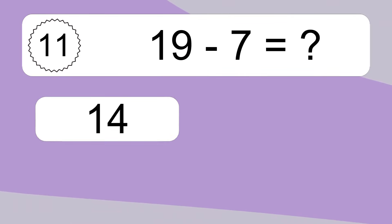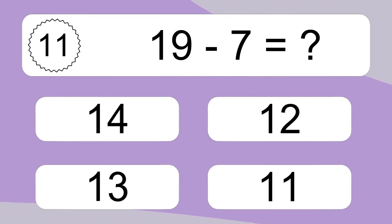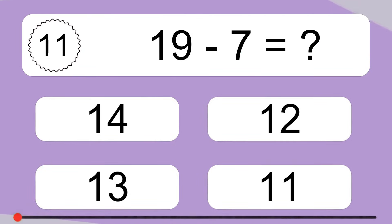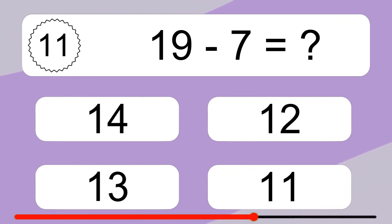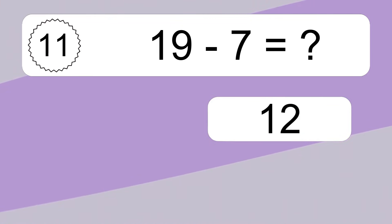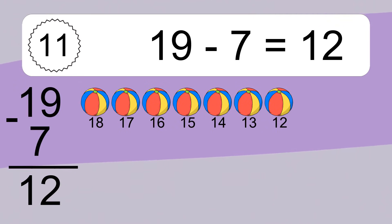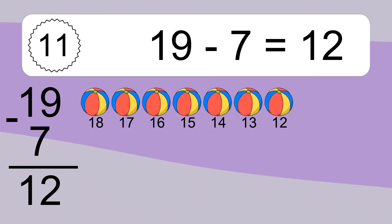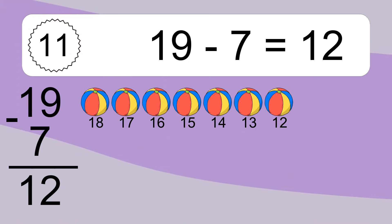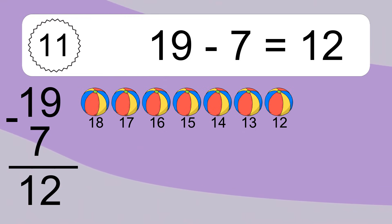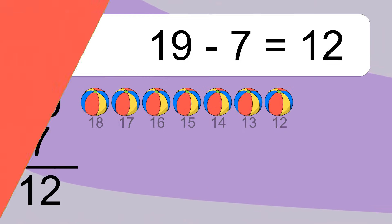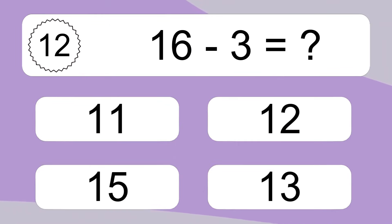19 minus 7 equals what? 19 minus 7 equals 12. Let's count it: 18, 17, 16, 15, 14, 13, 12.